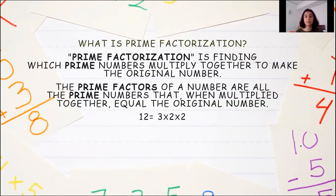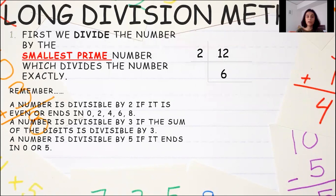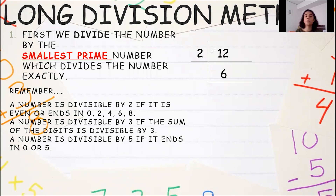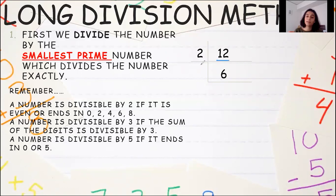Let's look at this step by step. Your first step is: you have to divide the given number by the smallest prime number which divides the number exactly. We are going to find the prime factorization of the number 12. We divide 12 by the smallest prime number that divides it exactly, which is 2. We write 2 on the left-hand side, divide 12 by 2, and get 6. So 6 becomes our new quotient.